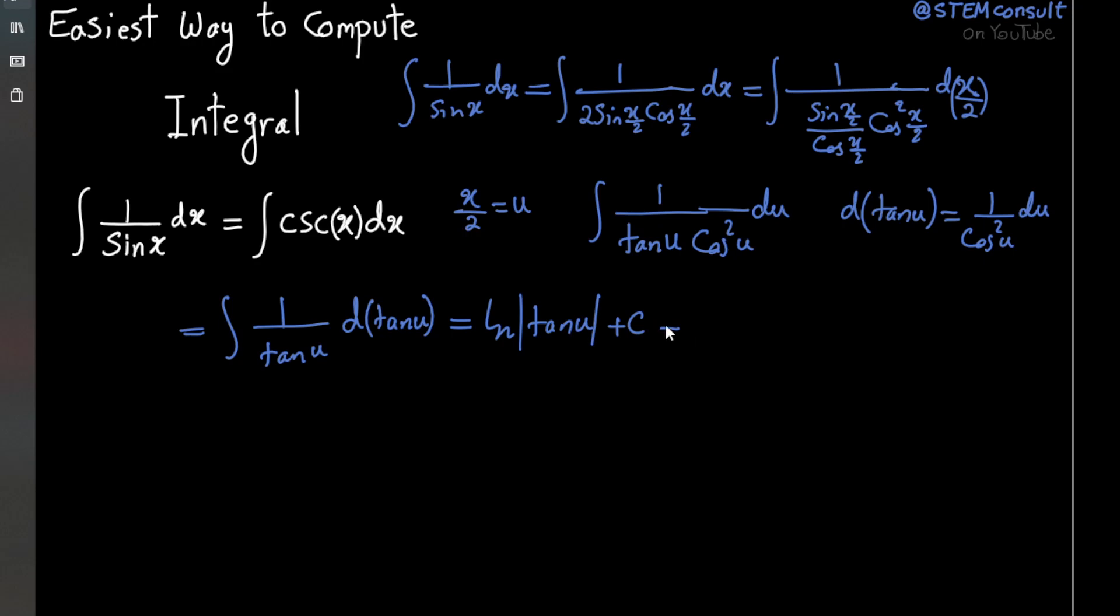Which now substituting for u, as here, equal to x over 2, we have ln absolute value of tangent x over 2, plus c. That's it. This is the solution for this integral. We solved it. You're done.